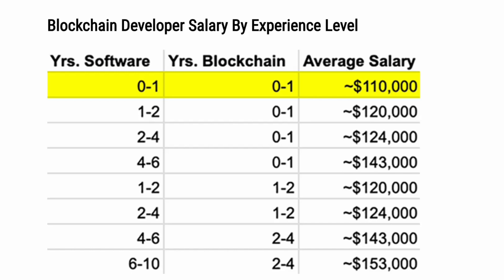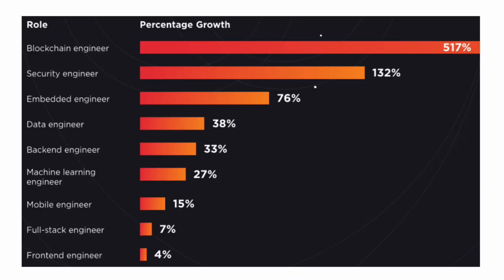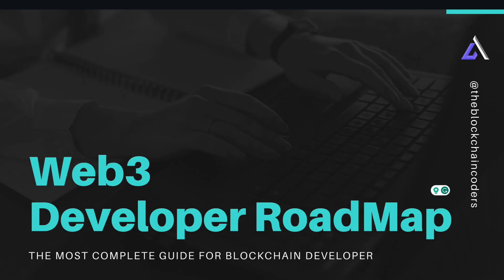If you look at normal development fields like software, Android, or web development, you'll never get this kind of starting package. Looking at growth of blockchain engineering compared to other fields: front-end developers see a 4% hike, but blockchain engineers get a 575% hike compared to other developers. Security engineers, embedded engineers, data engineers, backend engineers, machine learning, mobile engineers, and full-stack engineers all rank below. Blockchain is on top because there is high demand, low supply of developers, and few skills available in the market.